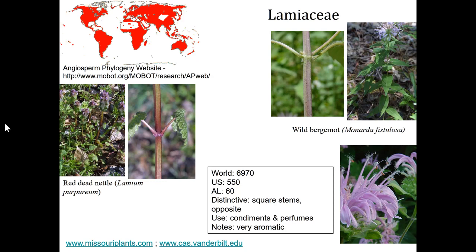The center of diversity for the Lamiaceae is the Mediterranean region, which makes sense when you think about what plants belong to this family. These plants can include herbs, shrubs, and some trees. They have fused petals with five lobes. When you look closely at the flower head of Monarda (wild bergamot), it's a complex inflorescence made up of multiple separate flowers that each have fused petals.